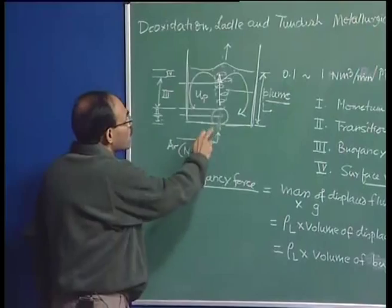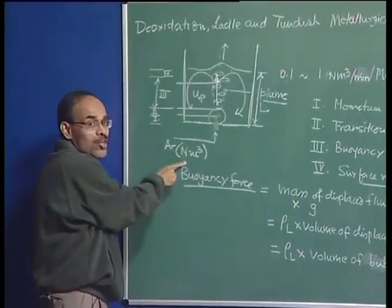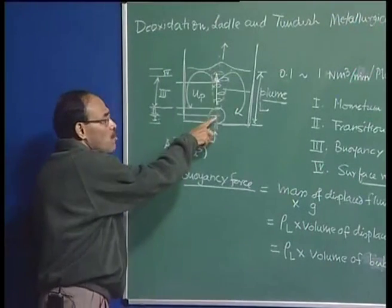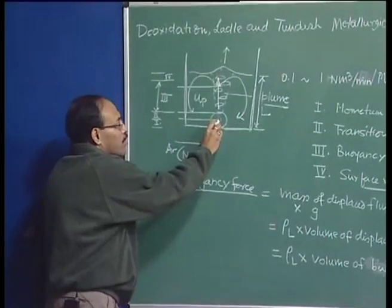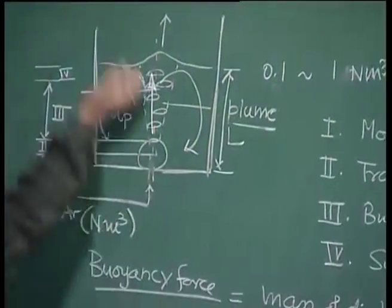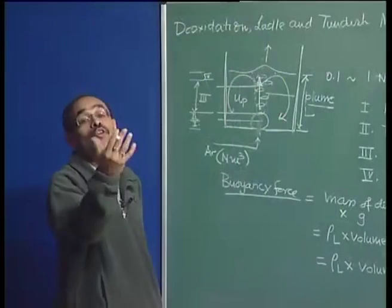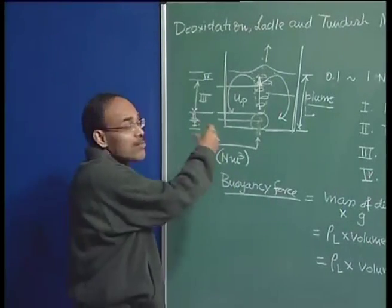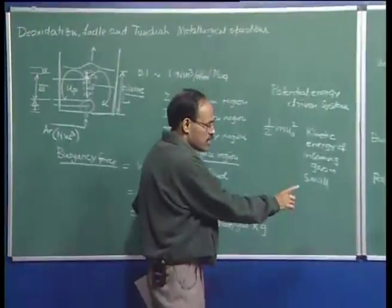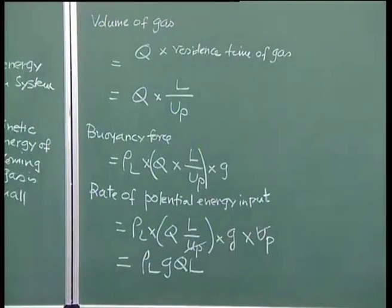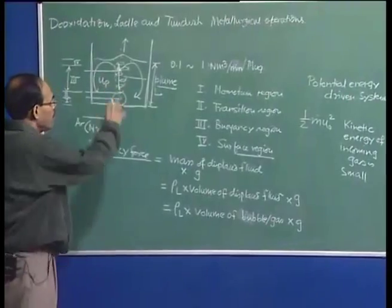The pressure-temperature effects govern the net volume of the bubble. A bubble introduced at one normal meter cube will have a significantly larger volume as it rises through the molten steel due to the combined effect of pressure decrease and temperature increase. Therefore, in this analysis, the gas flow rate used is referenced to some mean conditions of the system.